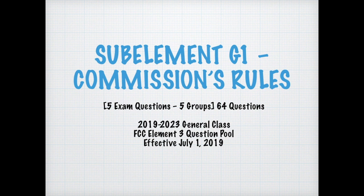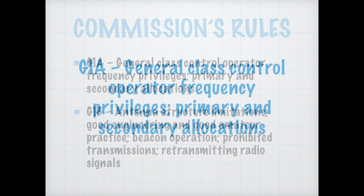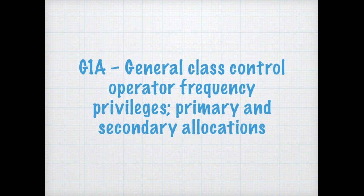This sub-element deals with the commission's rules — it's all about following the FCC guidelines and the recommended practices in amateur radio. So this section of the course will help you understand what those are and what's expected of us. In part one, we're going to talk about the General Class control operator frequency privileges, the primary and secondary allocations, antenna structure limitations, good engineering practices, beacon operation, what's prohibited and permitted, and what we can retransmit.